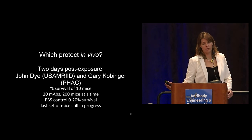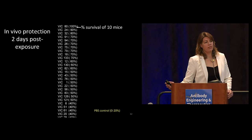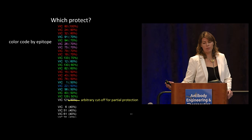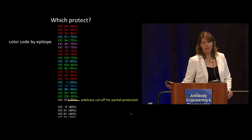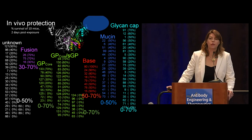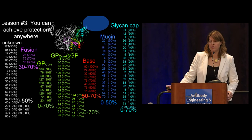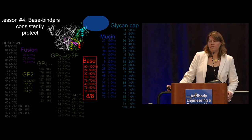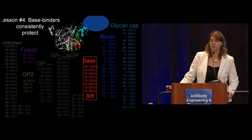If you color-code the antibodies that protect in the mouse model by epitope and slot them back in the grid, you can see the lesson: you can get partial protection from any epitope — every single epitope has at least one antibody giving partial protection — but some epitopes more consistently protect than others. The ones that bind the base, like KZ52 and two-thirds of ZMapp, consistently protect: every single one gives at least 50%, and one gives complete protection.